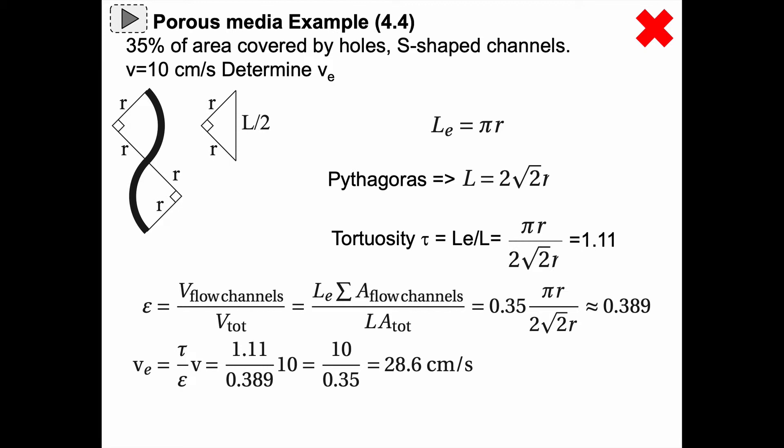Then we can calculate the porosity which is the volume of the flow channels divided by the total volume. That is the same as the effective length of the channels times the area of the flow channels and the total volume is the thickness of the material times the total area.